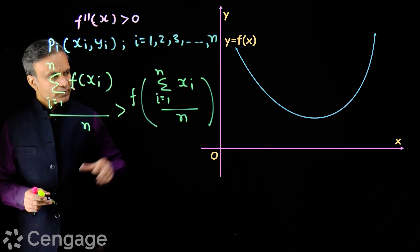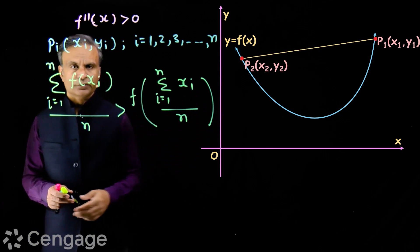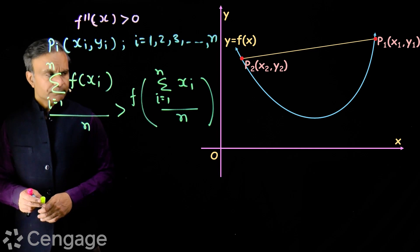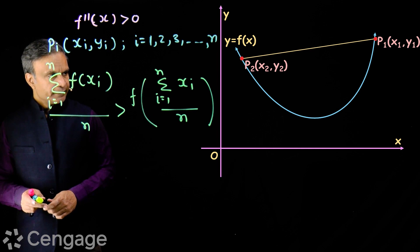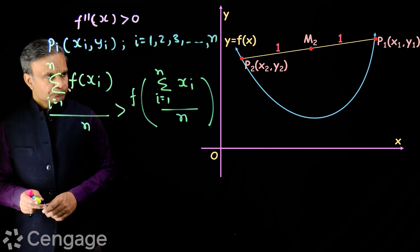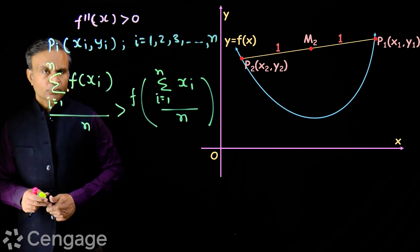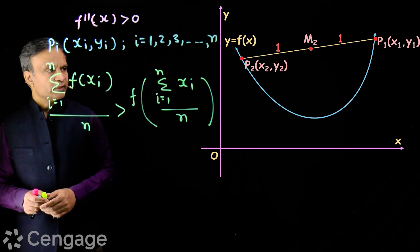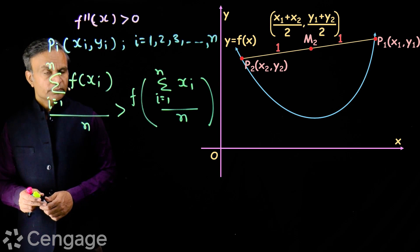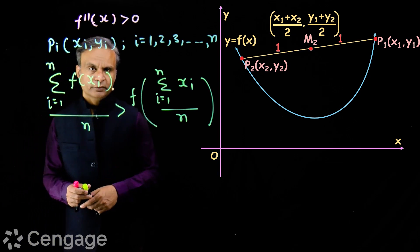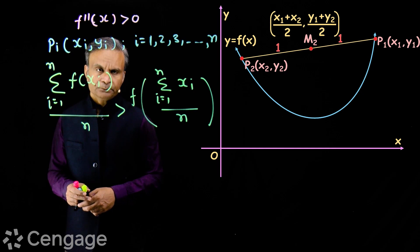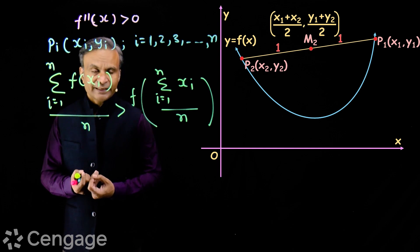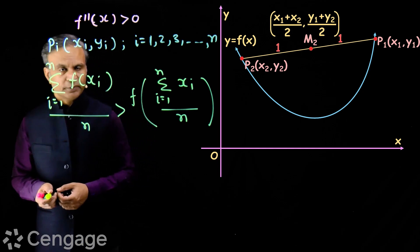Now how we start — we consider two points P1 and P2 on the curve, having coordinates (x1, y1) and (x2, y2). Then the coordinates of the midpoint — suppose midpoint is M2 — will be ((x1 + x2)/2, (y1 + y2)/2). Point M2 is the mean of points P1 and P2.